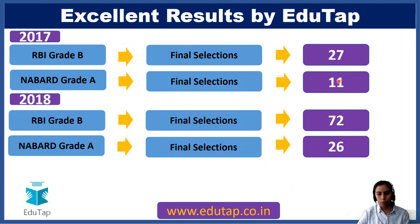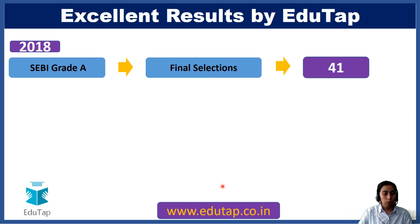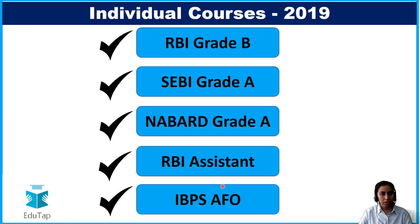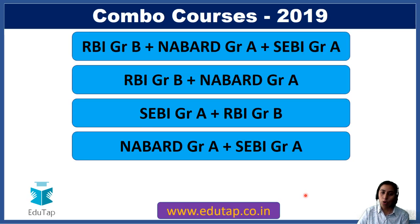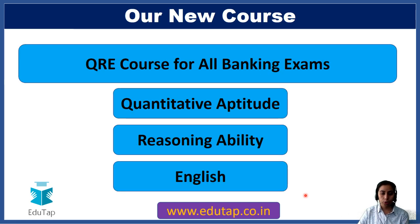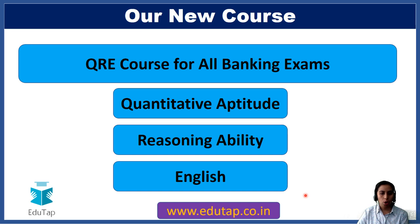Before proceeding to the lecture, I would like to tell you about our previous results. We have been blessed with some brilliant results — RBI and NABARD selections of 2017 and 2018 are here. In 2018, 41 of our SEBI Grade students got selected. We also offer a list of courses including combo courses if you are preparing for two or more exams simultaneously. We also have a new course for all banking examinations covering quantitative aptitude, reasoning ability, and English.